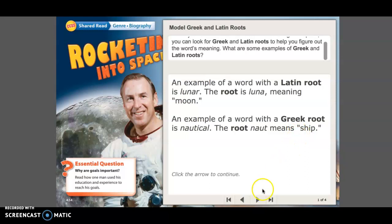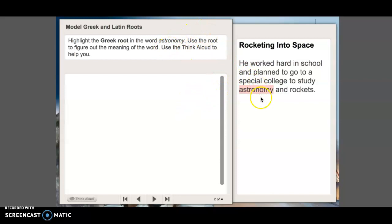All right. So let's practice. Here we have a word highlighted. It is a Greek root. It has, the word is astronomy. And we need to figure out what is the meaning of this word, astronomy. So it has a Greek root. So our Greek root is astro. It's here in blue. And astro in Greek is star. So what does astronomy mean? Astronomy means the study of stars. Okay. Let's practice another.